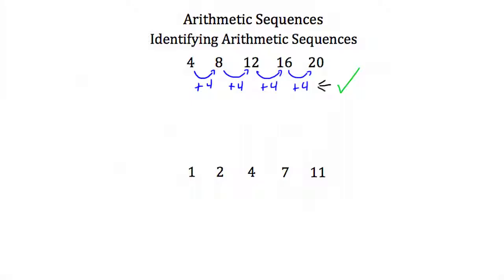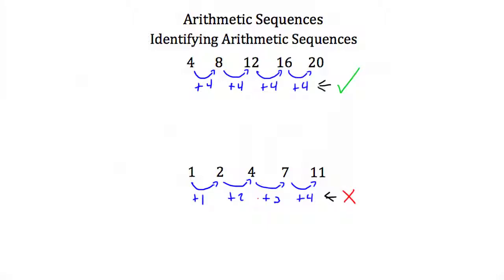Now let's look at our second example: the sequence 1, 2, 4, 7, and 11. To go from 1 to 2, I add 1. From 2 to 4, I add 2. From 4 to 7, I add 3. And from 7 to 11, I add 4. We are adding each time, but we're not adding the same amount — we're adding increasing amounts each time. So because these amounts are not constant, this is not an arithmetic sequence.